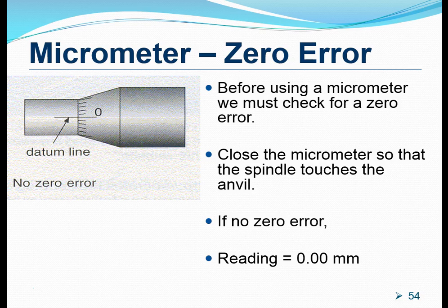When we are using a micrometer, when the anvil and the spindle meet, there should not be any reading shown on the micrometer, whether on the sleeve or the thimble. This means that when there is nothing measured, we should find that the zero marking on the thimble should meet the datum line perfectly. If that is the case, we can say that this micrometer has no zero error, and the reading is just 0.00 millimeters.